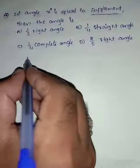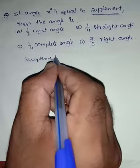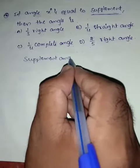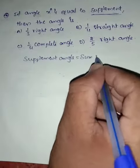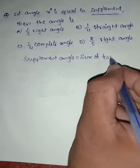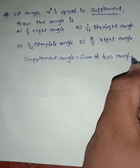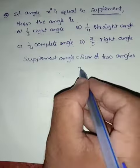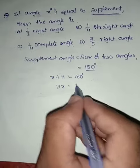First, the condition: supplement angle means the sum of two angles equal to 180 degrees. So the two angles are x plus x, which equals 180 degrees.